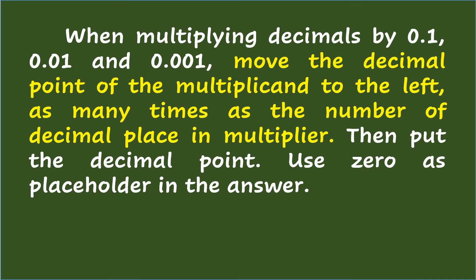When multiplying decimals by one-tenth, one-hundredth, and one-thousandth, move the decimal point of the multiplicand to the left as many times as the number of decimal places in the multiplier. Then put the decimal point and use zero as a placeholder in the answer.